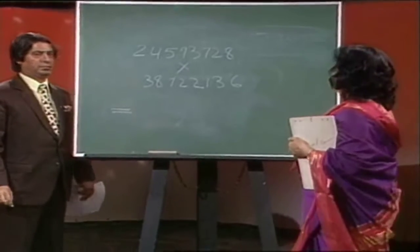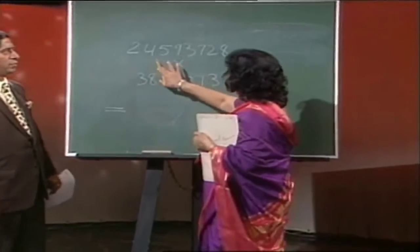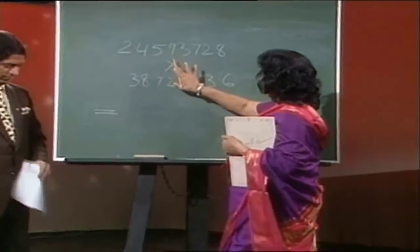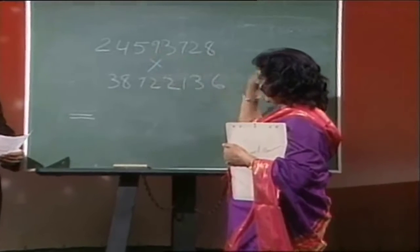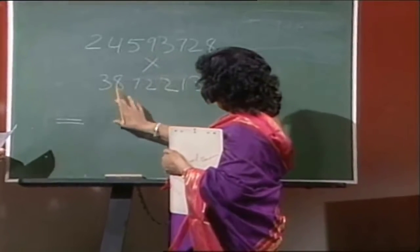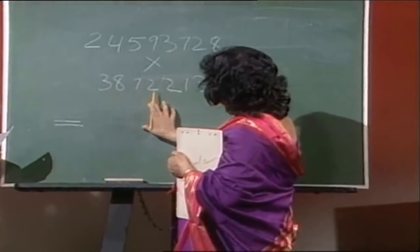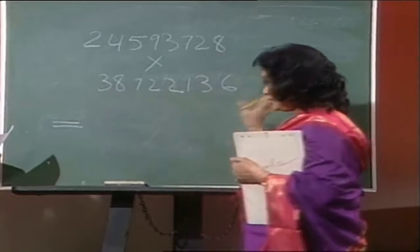Okay, now the question is 2, 4, 5, 9, 3, 7, 2, 8 multiplied by 3, 8, 7, 2, 2, 1, 3, 6.